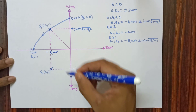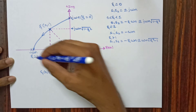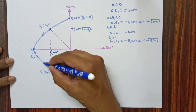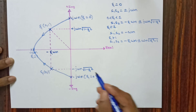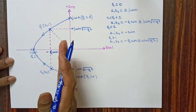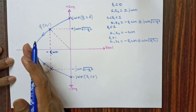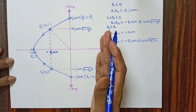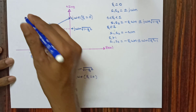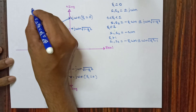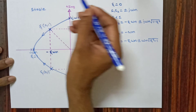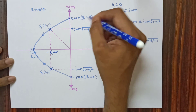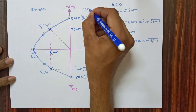Always remember: when roots are in the left hand side of the s-plane, the system is said to be stable. If any one root comes to the right hand side, then the system becomes unstable. If all roots are in the left hand side, the system is stable; if any root is on the right hand side, the system is considered unstable.